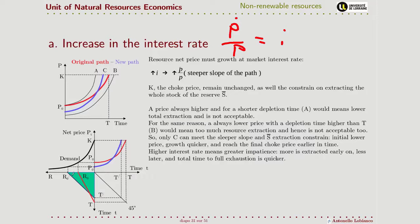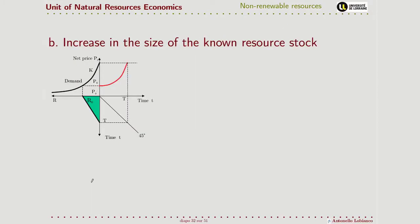So the blue line is the new price path: it starts lower, grows steeper, and crosses the original path. Under this new price path, we extract more of the resource at the beginning and finish it earlier. In a certain way this makes sense, because a higher interest rate means greater impatience, so we are extracting more now rather than later.